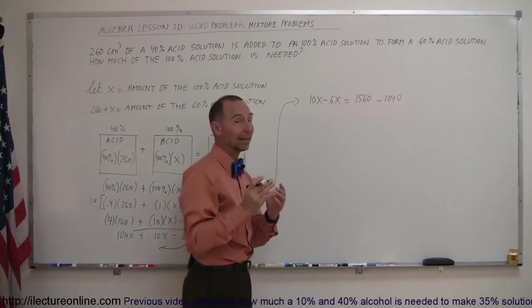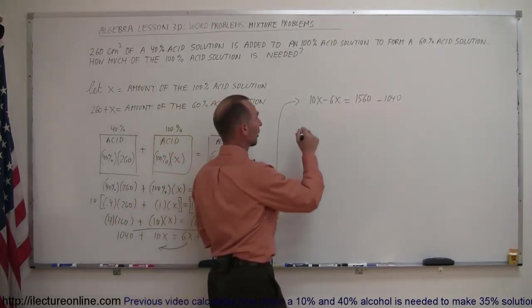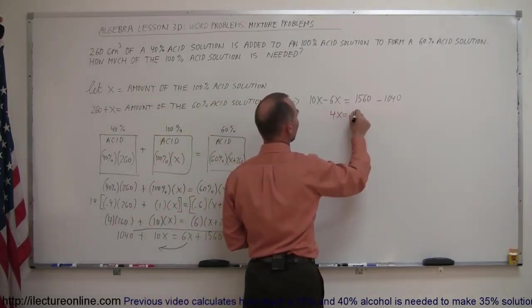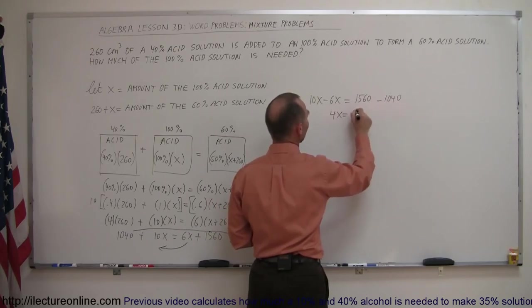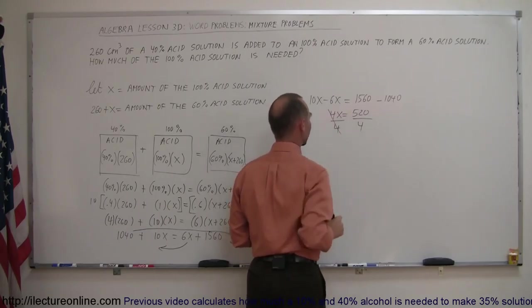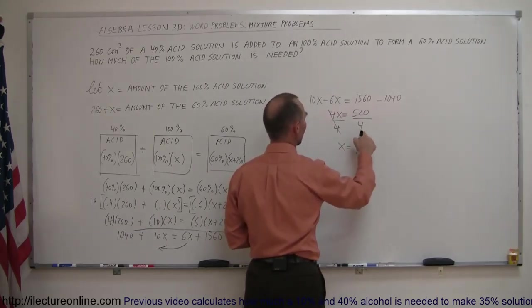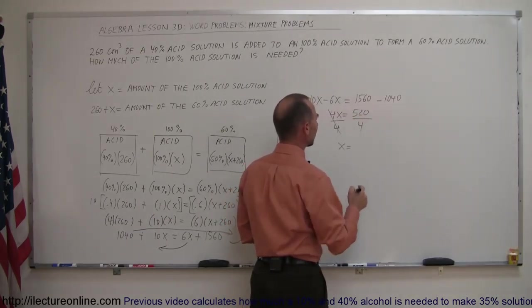Now we can combine like terms on both sides of the equation. On the left side we get 4X equals, on the right side, we get 520. And finally, we divide both sides by the numerical coefficient of the X. That cancels out. We have X is equal to, 4 goes into 520 how many times?